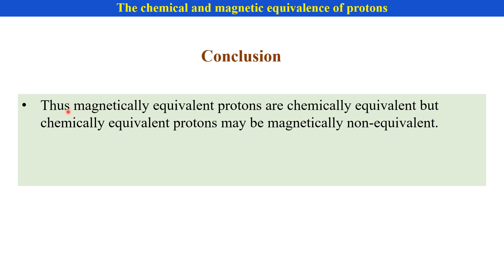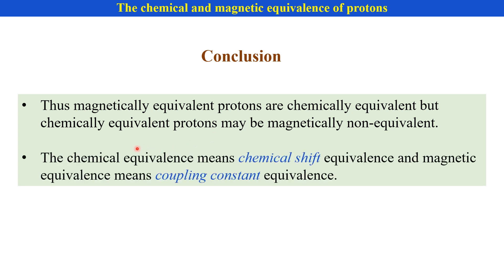Chemical equivalence means chemical shift equivalence, and magnetic equivalence means coupling constant equivalence.